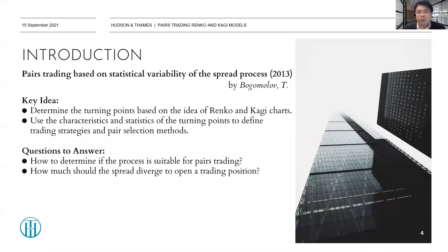This presentation, as well as the module presented in the Arbitra Lab, are based on a paper called 'Pairs Trading Based on Statistical Variability of the Spread Process,' published in 2013. The first idea was to determine the turning points of the process we are going to trade, based on the ideas of Renko and KG charts, and then use the characteristics and statistics of the turning points to define trading strategies and pair selection methods.